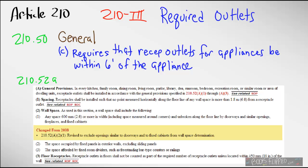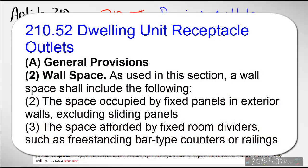Also, this code article lets us know that if there's a fixed panel on the exterior wall, that is included in wall space. Where that comes into play is if you have a French door that has one side that doesn't open, the side that doesn't open is counted as part of the wall. If you have a sliding glass door, the side that doesn't open is counted as part of the wall. The rest of that article or part of the article tells us that the space afforded by fixed room dividers, such as freestanding bar type counters or railings, anything protruding out of the wall that's fixed up to the wall, we have to count as wall space.